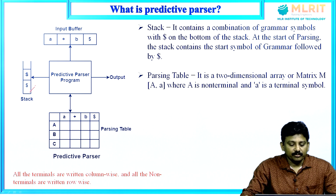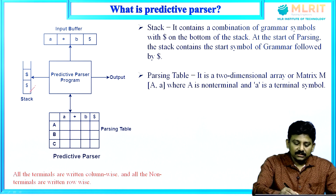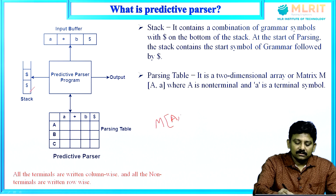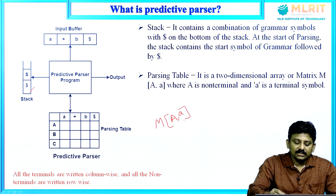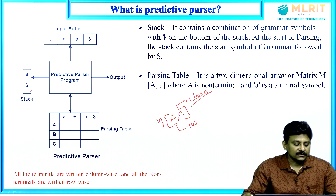The next component is the parsing table. It is a two-dimensional array having rows and columns — non-terminals representing the rows and terminal symbols representing the columns. Any cell in the table is represented by M[A, a], where capital A is a non-terminal indicating the row, and small a is a terminal indicating the column.